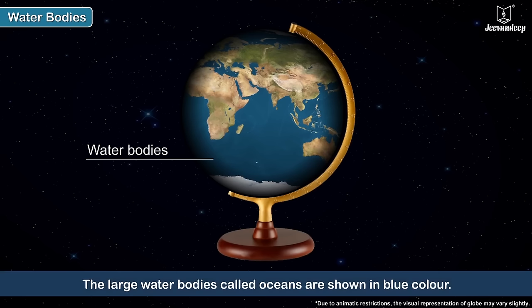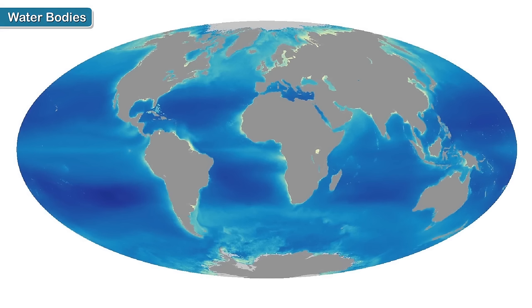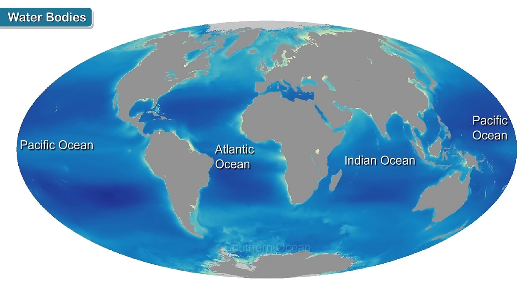The large water bodies, called oceans, are shown in blue color. There are five oceans on the Earth: the Atlantic Ocean, the Pacific Ocean, the Indian Ocean, the Southern Ocean, and the Arctic Ocean.